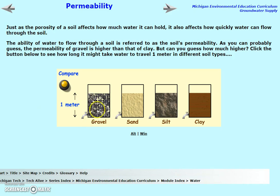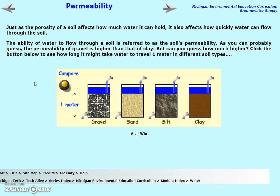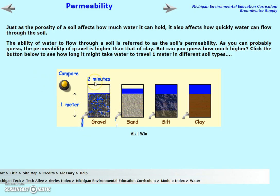We have four containers of different size sediments. Gravel is composed of the largest sediments, so it has the largest pores — you can see these big spaces. Sand is smaller, silt is smaller, and clay has the smallest sediments. They have different particle sizes. When I push this button, it's going to fill up each container with water and show us how long it would take for the water to get through each of the different particles. The gravel has the largest pores, so it would take about two minutes for the water to get through it. The sand has smaller pores — it would take about two hours. The silt and clay are going to take even longer because they have the smallest pores.